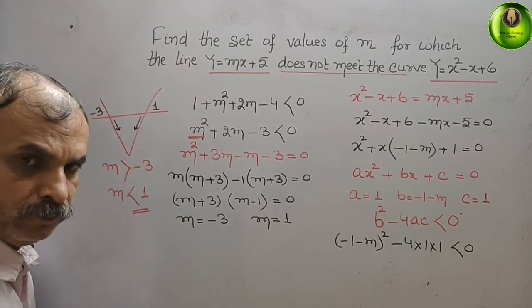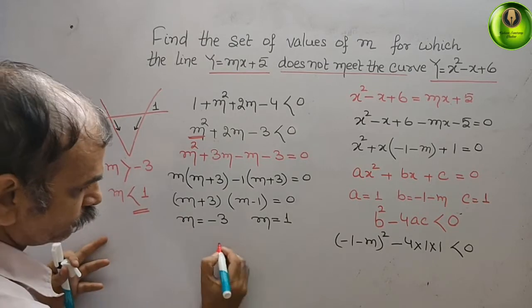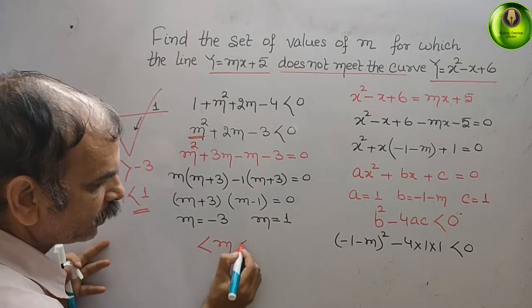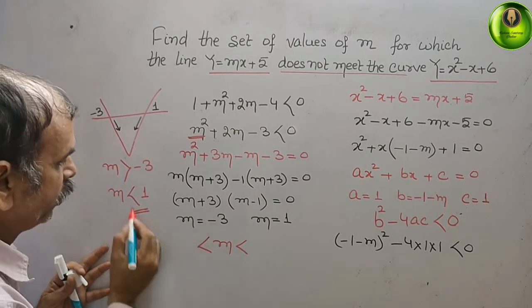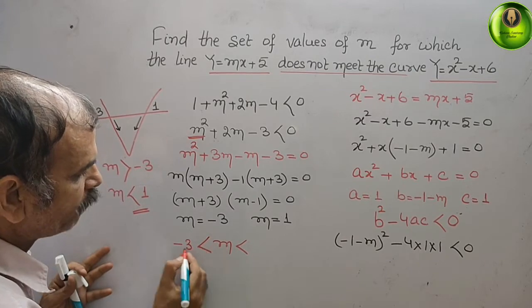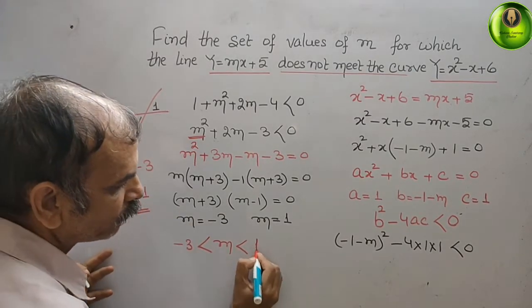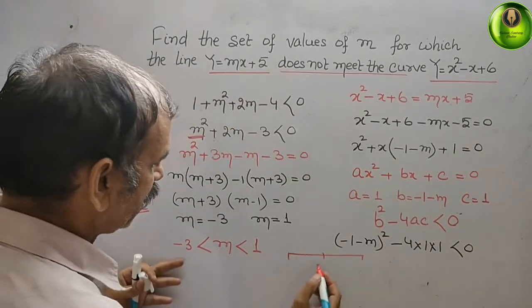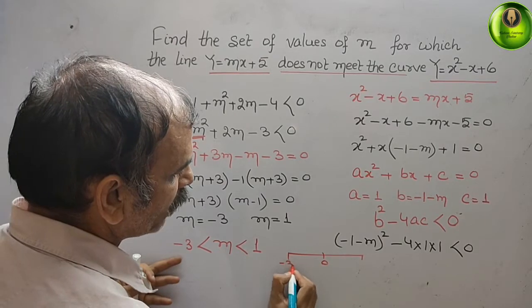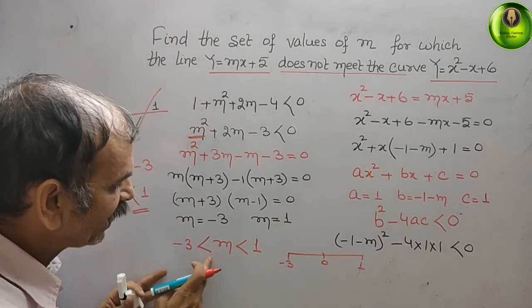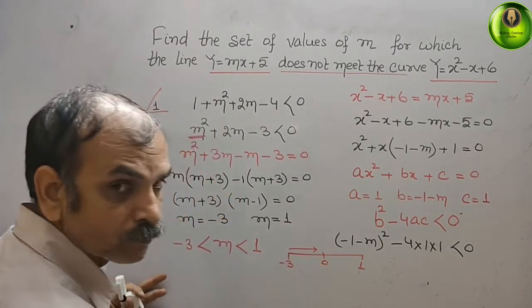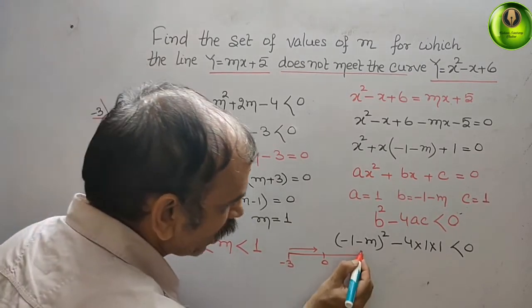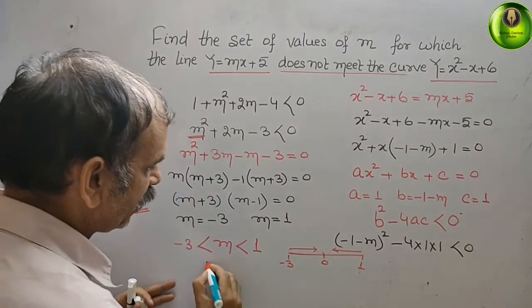So, m should be greater than -3 and m should be less than 1. Drawing a number line with -3 and 1 marked, m greater than -3 means moving to the right of -3, and m less than 1 means moving to the left of 1. Both conditions are satisfied in the same region, so the answer is -3 < m < 1.